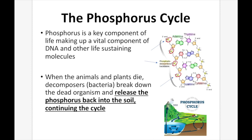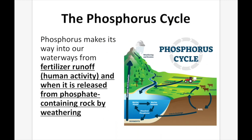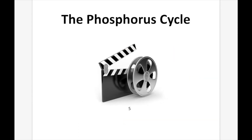When animals and plants die, decomposers and bacteria break down the dead organisms and release phosphorus back into the soil, continuing the cycle. Phosphorus makes its way into waterways from fertilizer runoff, human activity, and when it's released from phosphate-containing rock via weathering and erosion. Once you've watched this video, you've completed the lesson on cycling of matter.